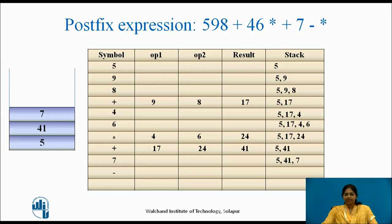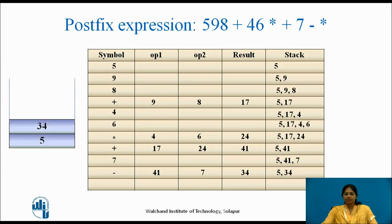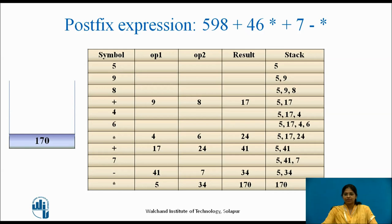The next symbol is minus — it is an operator, pop the top two elements 41 and 7, perform subtraction, result is 34, push 34 on the stack (stack: 5, 34 with 34 at top). The next symbol is the multiplication operator — pop the top two elements 34 and 5, perform multiplication, result is 170, push it on the stack. The stack now contains only one element, 170, which is the result for this postfix expression.